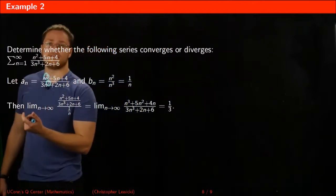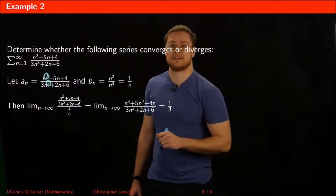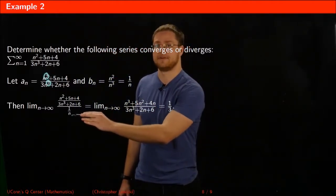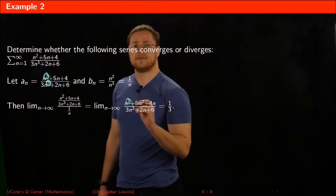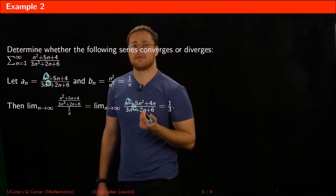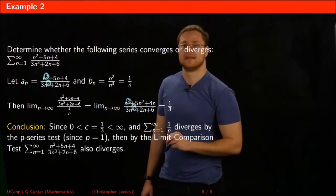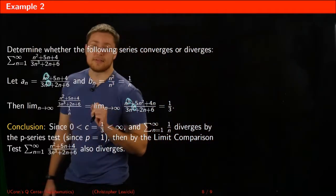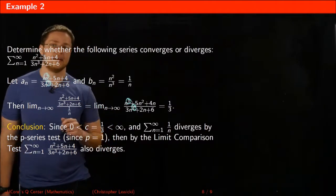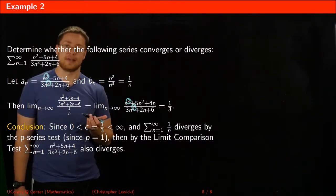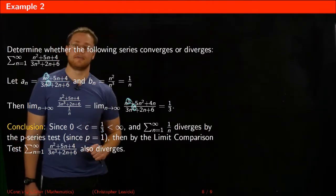Setting up the limit as n goes to infinity of the two fractions divided by each other: dividing by a fraction is the same as multiplying by its reciprocal, so n distributes to everything in the numerator. The degrees in the numerator and denominator are the same, so the limit is just the ratio of the leading coefficients — in this case, 1 divided by 3. Since this c-value is a positive number between 0 and infinity, and the series 1 divided by n diverges by the p-series test, the limit comparison test tells us this series also has to diverge.